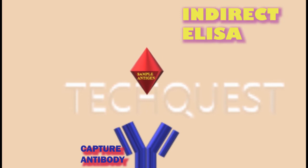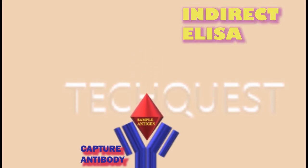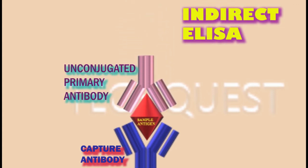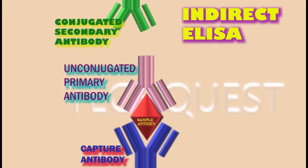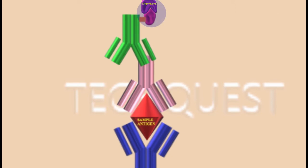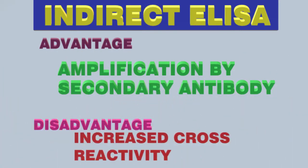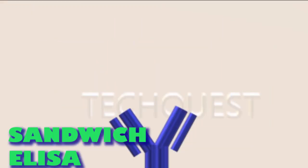Indirect ELISA: the antibody is fixed to the 96-well plate; the antigen from the sample attaches to these antibodies and becomes immobilized. An unconjugated primary detection antibody is added that binds to the specific antigen. A conjugated secondary antibody directed against the host species of the primary antibody is added, then adding substrate produces a signal proportional to the amount of antigen. Advantages: amplification using a secondary antibody makes it highly amplified and specific. Disadvantage: potential for cross-reactivity caused by the secondary antibody.